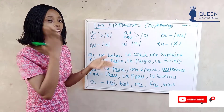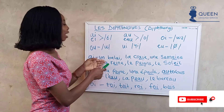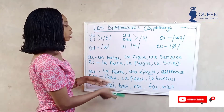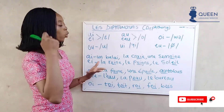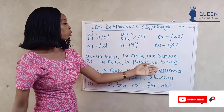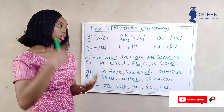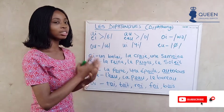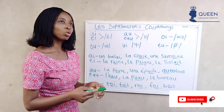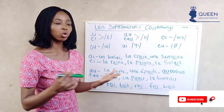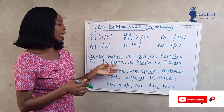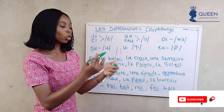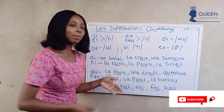We also have 'ei' which gives the sound 'eh' in French. For example, 'la reine' — the 'ei' together gives us 'eh'. We have 'le soleil', meaning 'the sun'. So whenever we find 'ai' or 'ei' together in a word, we know they give the 'eh' sound.